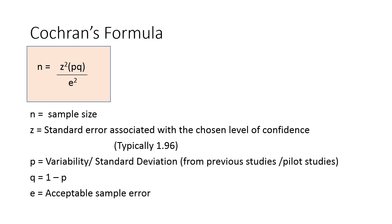And next is the standard sample size formula. This formula is Cochran's formula and the formula is n equals z square pq divided by e square. Small n, that is the sample size, is equal to z square.